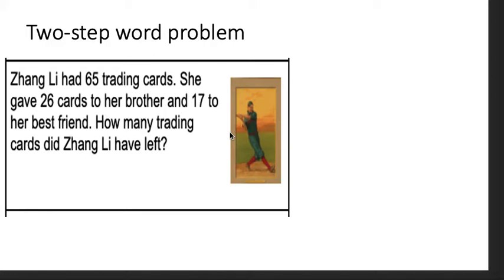Now, with this two-step word problem, what we're going to be doing is actually looking at the two steps first. Remember, three-read protocol — that means that we read a story problem at least three times. I'll read it the first time.